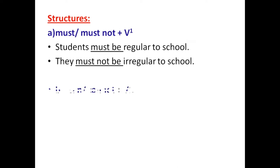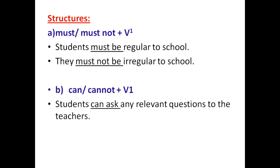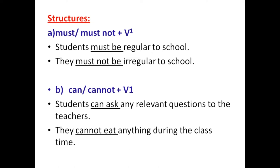The second structure is can or cannot plus verb. Example: students can ask any relevant questions to the teachers — meaning students are allowed to ask questions if they are relevant to their topic. The sentence structure is can plus V1. Another example: they cannot eat anything during class time — that is a prohibition and a rule. The structure is cannot plus V1.